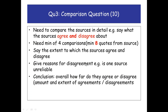Question 3 is where things start to get more chunky and you go into more detail. It's worth 10 marks and this is where you are comparing sources in detail, saying whether the sources you are given agree or disagree about something. You need to also mention the extent to which the sources agree and disagree. Using the word 'extent' would be very helpful — for example, sources A and B agree to a large extent. You also need to give reasons for why they might agree or disagree.